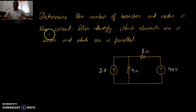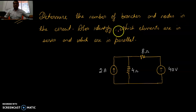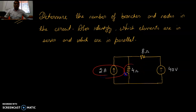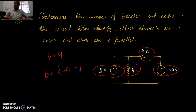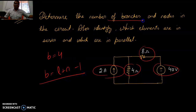Question 2: Determine the number of branches and nodes in the circuit. How many branches are there? We have branch 1, 2, 3, and 4 — four elements in four different branches. So B equals 4. We know that B equals L plus N minus 1, where L is the number of loops and N is the number of nodes.